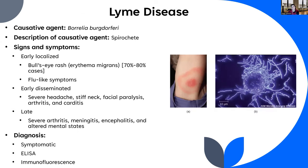Lyme disease — not 'Lyme's disease' — is named after Lyme, Connecticut, where it was first described. It is caused by the spirochete Borrelia burgdorferi. The hallmark early sign is erythema migrans, the bullseye rash, which occurs in 70–80% of cases. Early localized symptoms also include flu-like illness. However, in 20–30% of cases the rash doesn't appear, and if the bite is in a hidden area, it may go unnoticed.